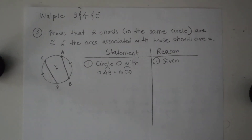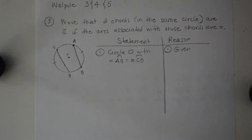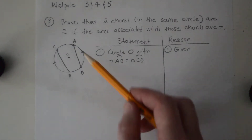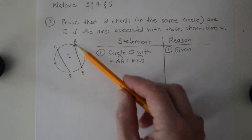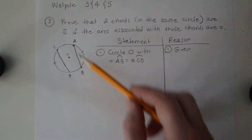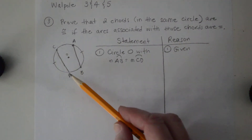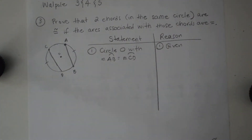For problem 3, prove that two chords in the same circle are congruent if the arcs associated with those chords are equal. Here is the picture: we've got a circle with two chords AB and CD. The arc associated with chord AB is arc AB, and the arc associated with chord CD is arc CD, and we know those two arcs are congruent.